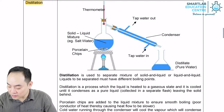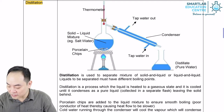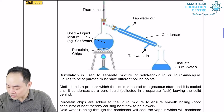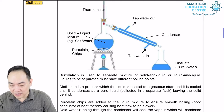Secondly, in Singapore, drinking water can be produced using distillation of seawater. In this process, seawater is heated up until water turns into vapour and condenses in a new container. The salt is left behind and the water collected is free of salt, and it is known as desalinated drinking water.